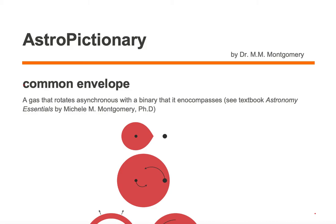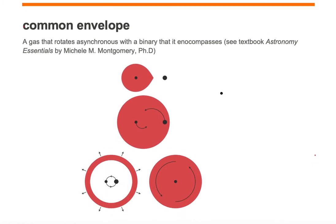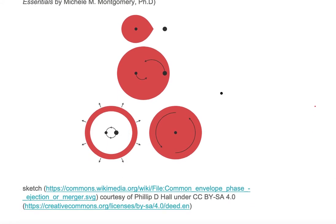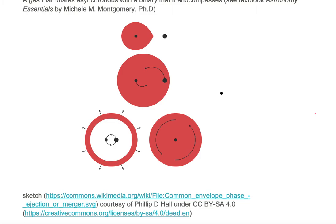A common envelope is a gas that rotates asynchronously with the binary that it encompasses. Let's take a look at examples of common envelopes and examples that are not common envelopes.